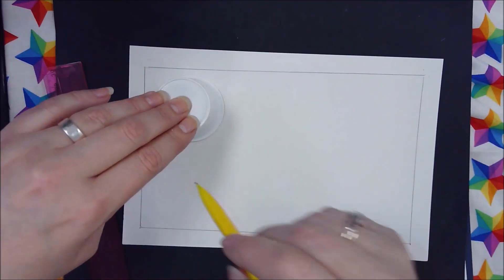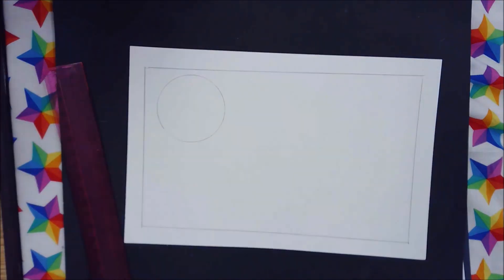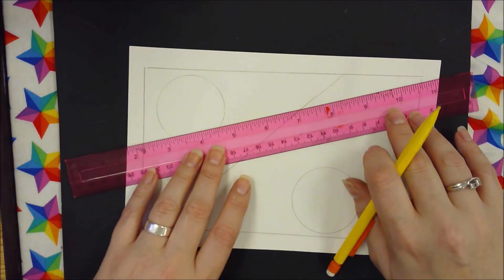All right, take your round object. Draw two or three circles, possibly more, your choice, where you place them.